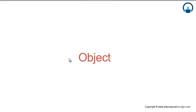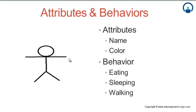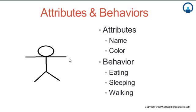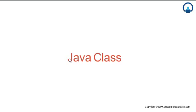Java is called object-oriented programming. What does an object mean? Let's take an example — consider a human being. Human beings have different attributes and behaviors, like name and color are attributes, and behaviors like we eat, we sleep, we walk. A Java class is basically a template used to describe those attributes and behaviors. So our class 'Human' will describe those attributes and behaviors.